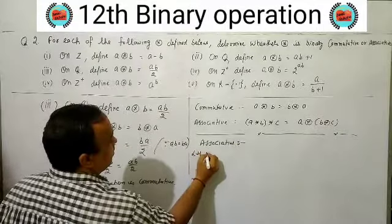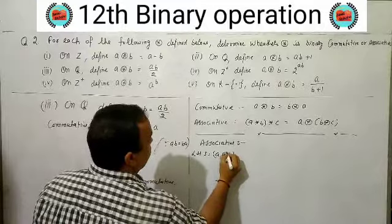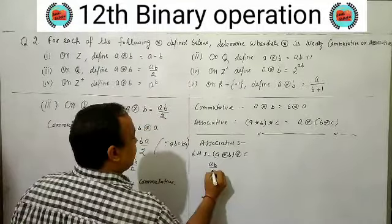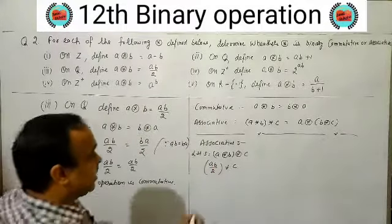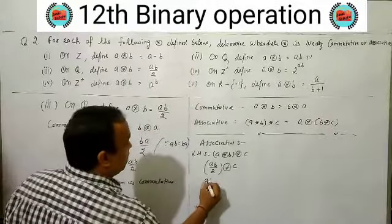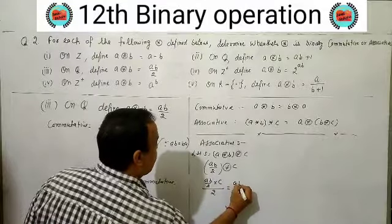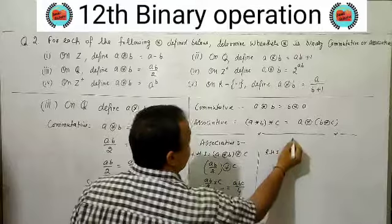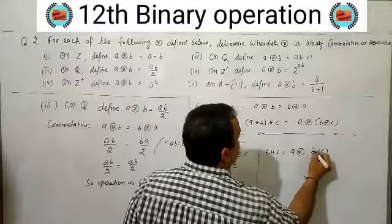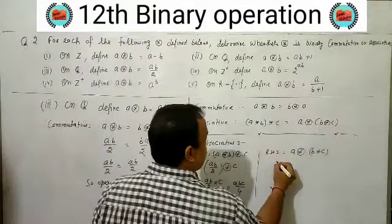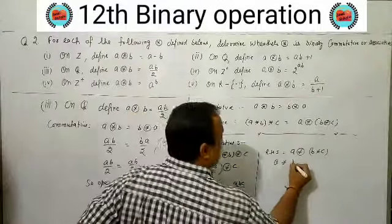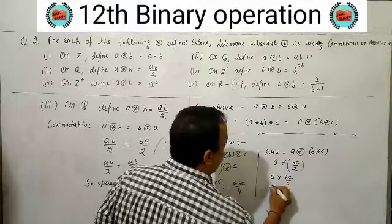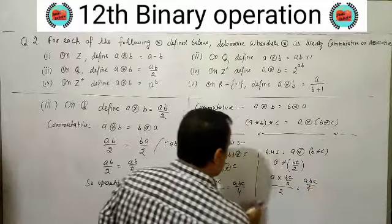Checking associative for a★b = AB/2. Left hand side: (A★B)★C = (AB/2)★C = (AB/2 × C)/2 = ABC/4. Right hand side: A★(B★C) = A★(BC/2) = (A × BC/2)/2 = ABC/4. Both sides equal ABC/4.